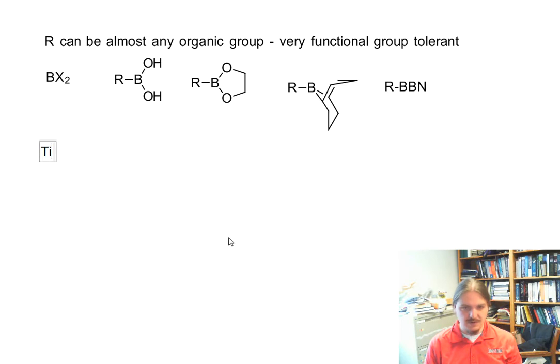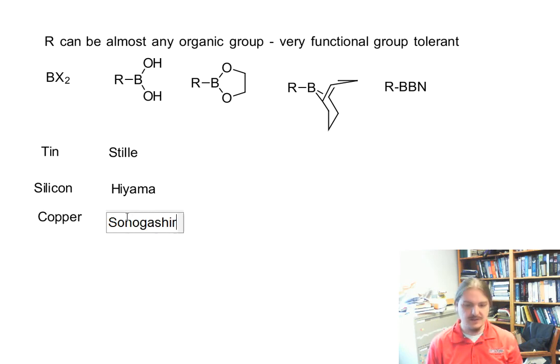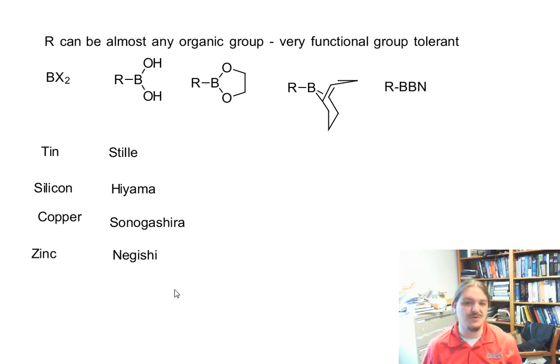And in fact, replacing boron with other elements generates other variations of this reaction. Let's see. Tin is the Stille coupling. And silicon is the Hiyama coupling. And copper is the Sonogashira. This is especially useful for copper acetylides. And zinc is called the Negishi reaction. These are almost all Japanese names. Most of these reactions were invented in Japan by a Japanese chemist.